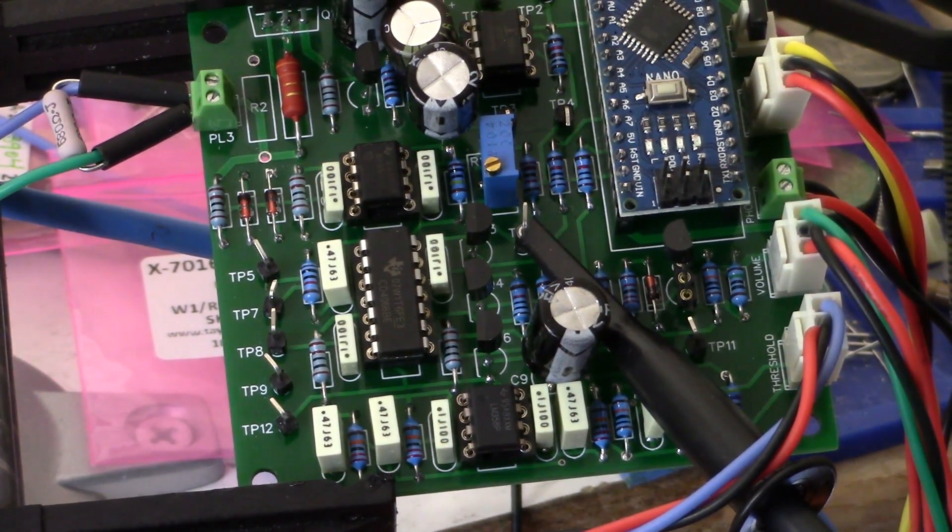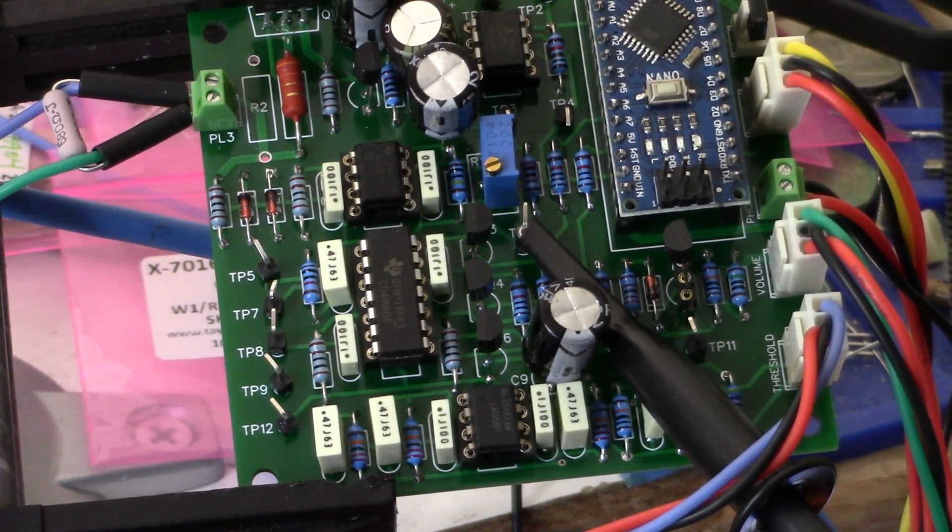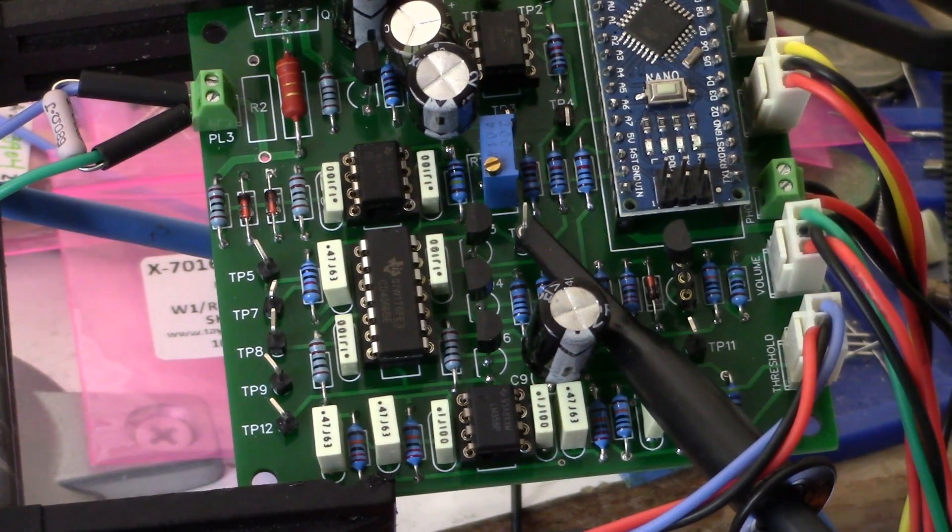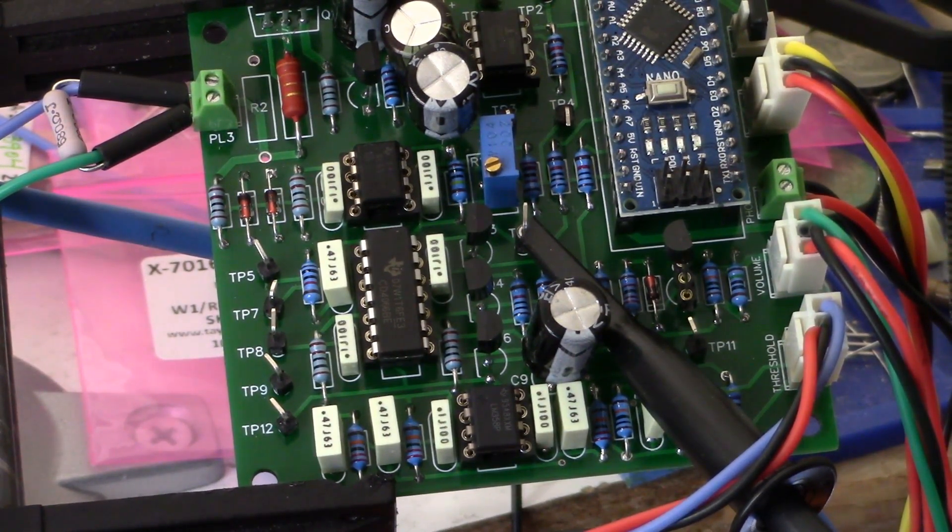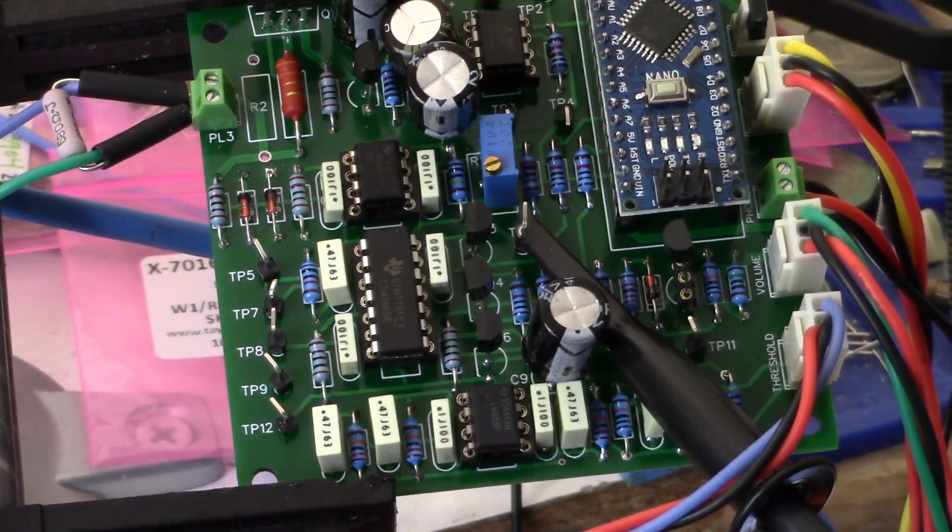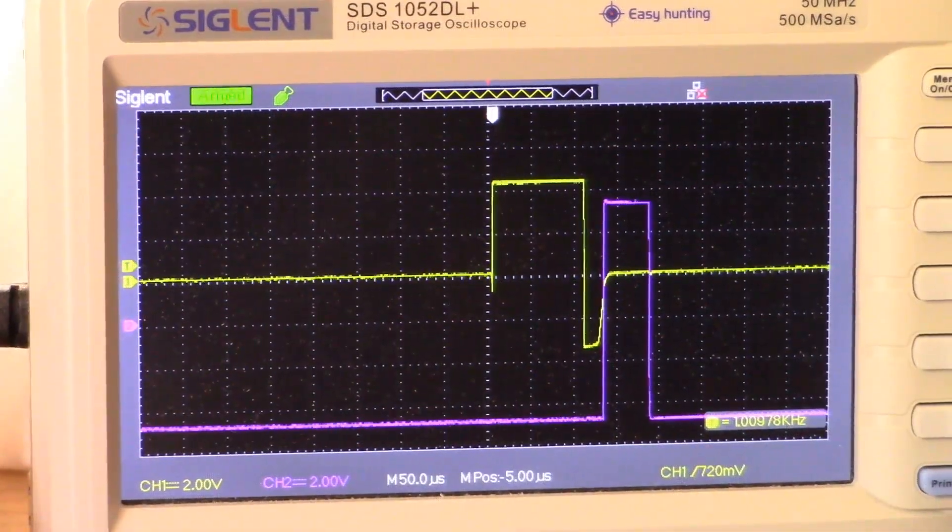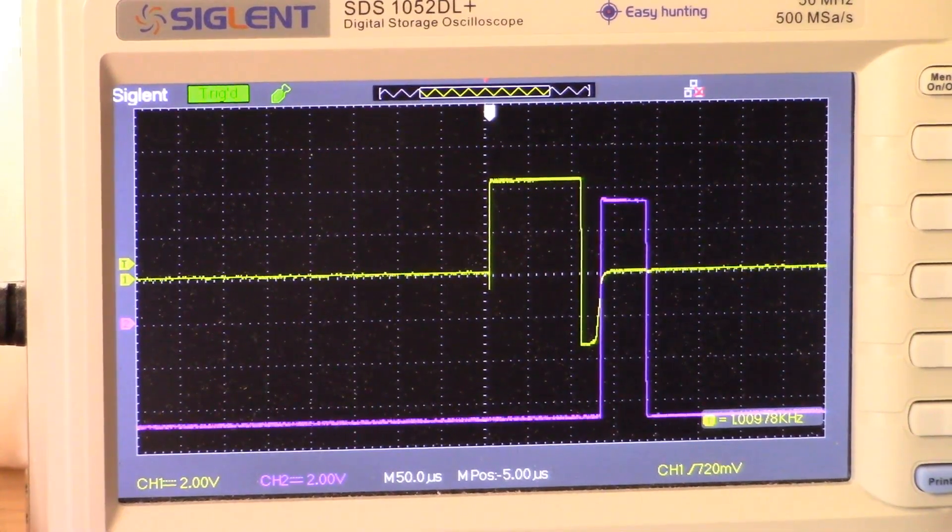So let's look at that right now on the oscilloscope. All right, on the oscilloscope you see on channel one the output of the preamp test point six, and our main sample which is test point five.